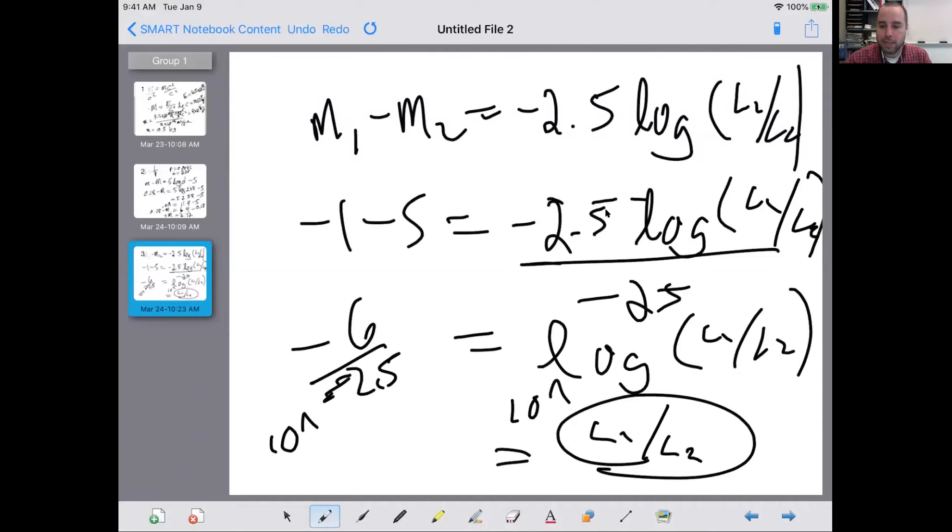This is where you need your calculator. I'm not sure what this number is going to be, but that's the log of L1 over L2. And this is where you need to take both sides and raise it to the power of 10 to both sides. And you'll get L1 over L2, which is the number you want, is equal to 10 raised to the power of negative 6 divided by negative 2.5. I don't remember exactly what that number is, but that's the procedure for doing that. Is that good enough?